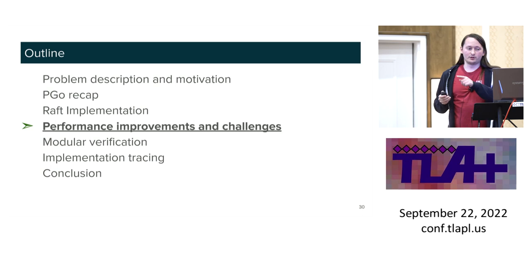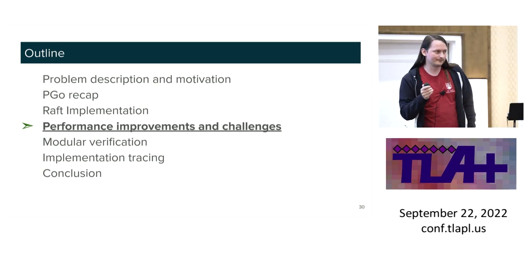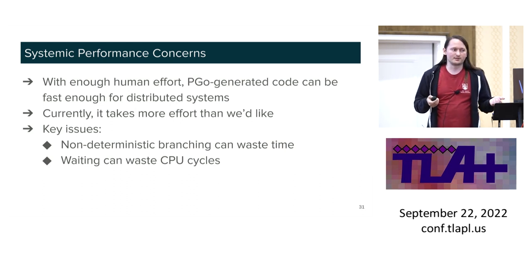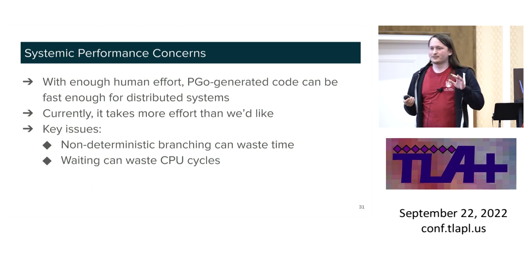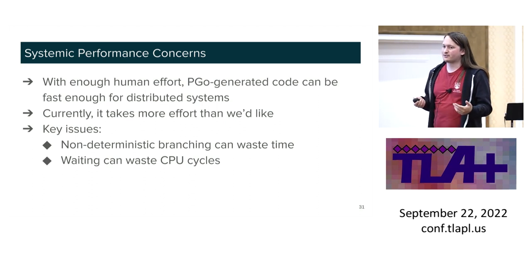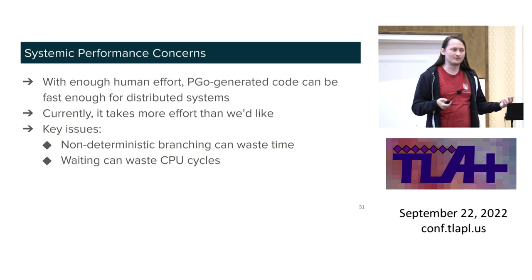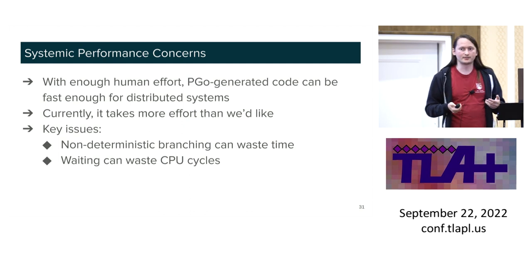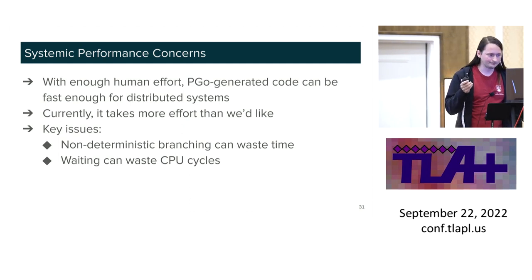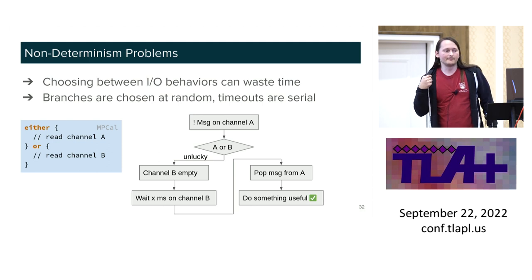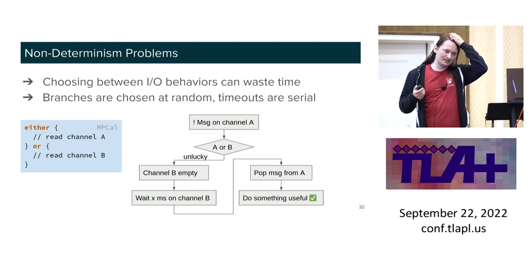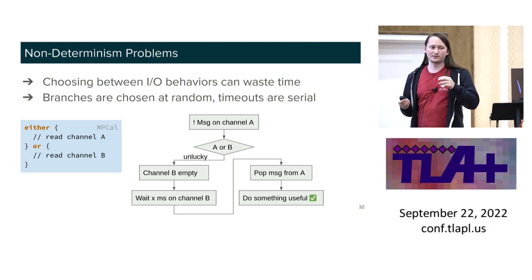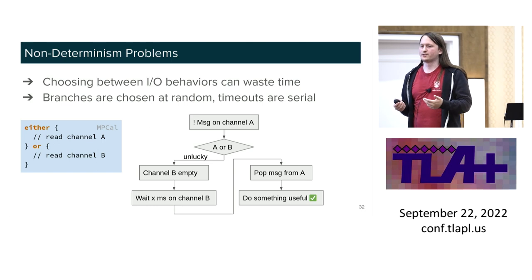Before we get to the modular part, a bit more about performance. We're doing pretty well for a spec-to-code solution in terms of performance, but it's a bit harder to achieve than we'd like. There are a few things we had to work around that PGO doesn't deal with properly. The first issue is handling non-determinism — our solution is correct but not helpful. We had to go out of our way to remove several 'either' statements from our code because it was causing performance problems.